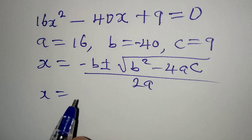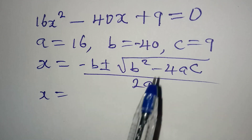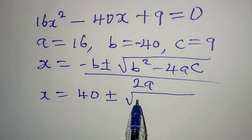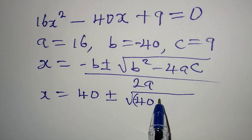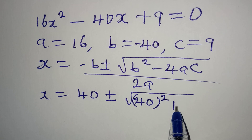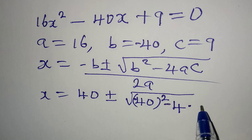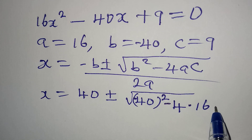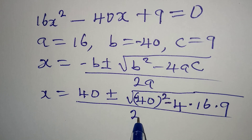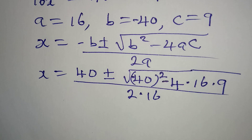We have negative b, and since b is negative 40, that means we'll be having positive 40 plus or minus the square root of negative 40 squared, which is negative because b is negative 40, then minus 4 times a which is 16 times c which is 9, all over 2 times a which is 16.